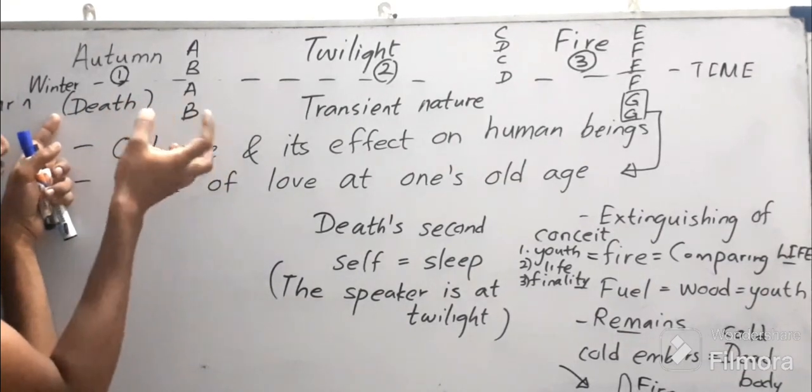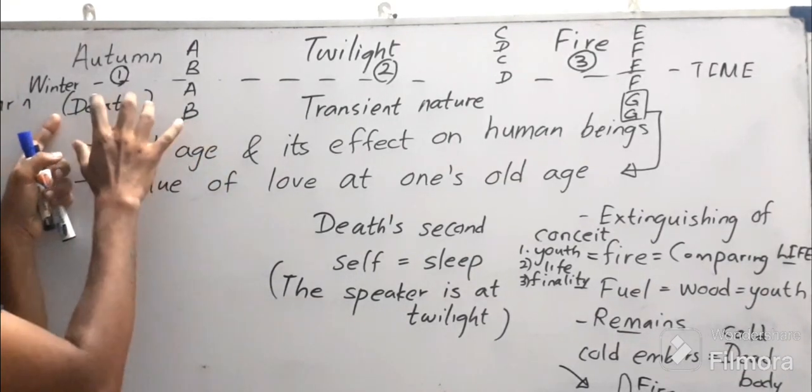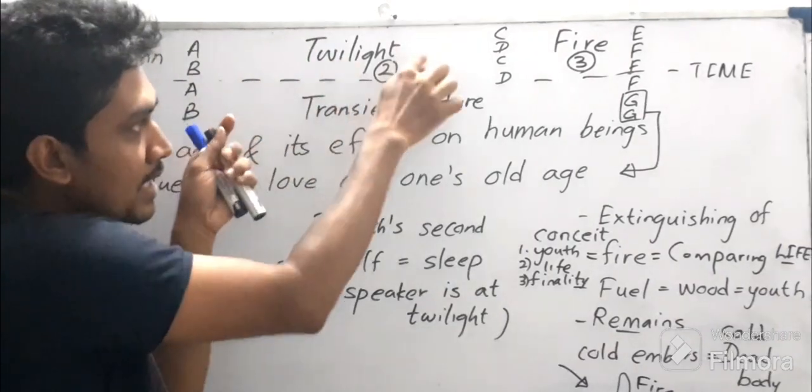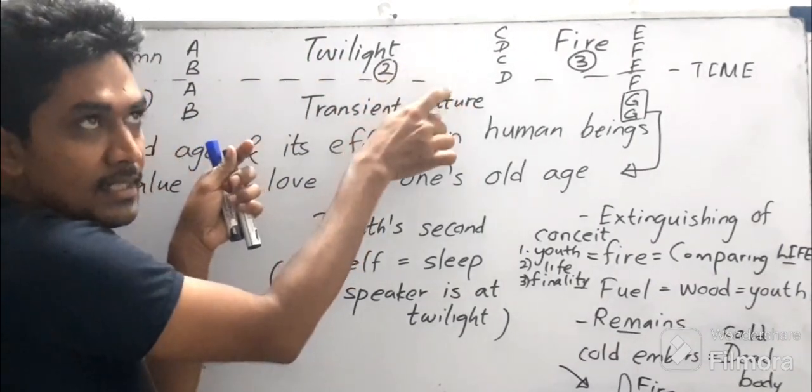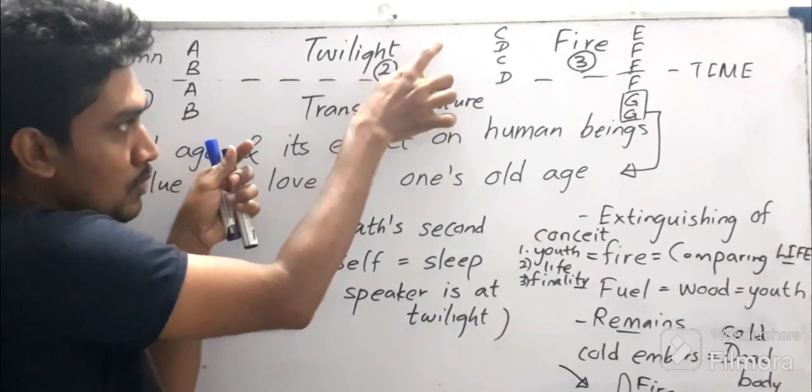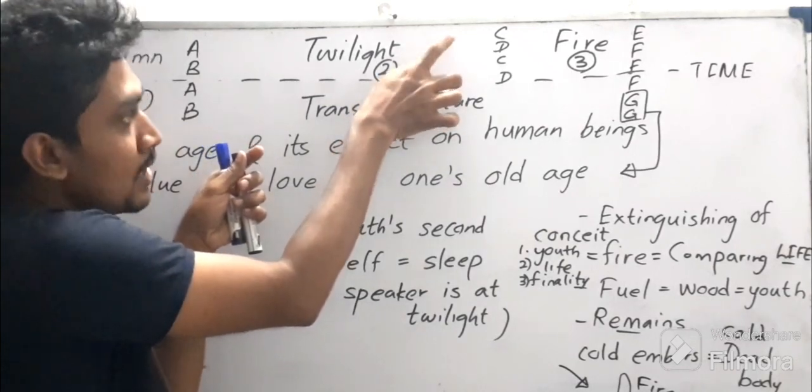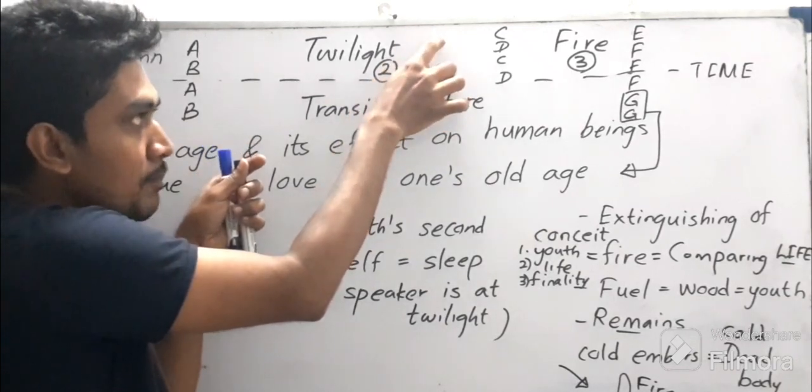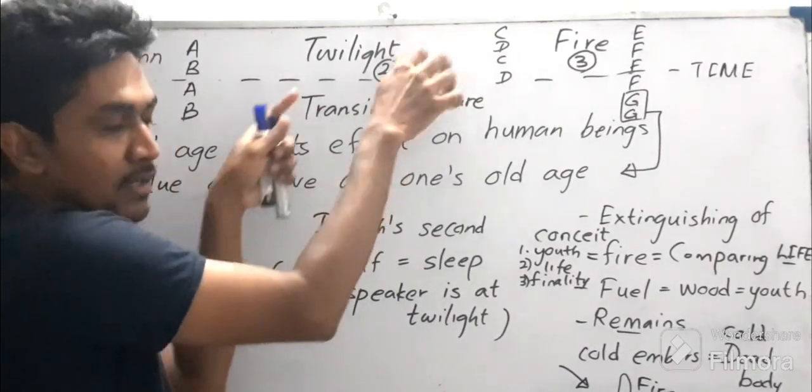Twilight means the demarcation of day and night, so that means we are bound to death, we are bound to the impermanence of human life.